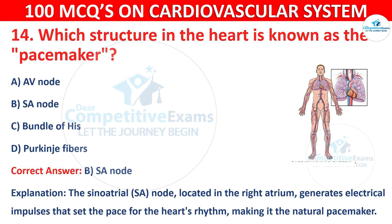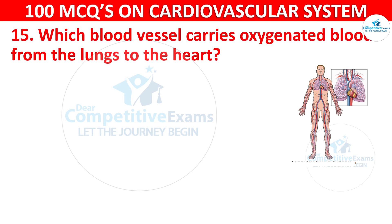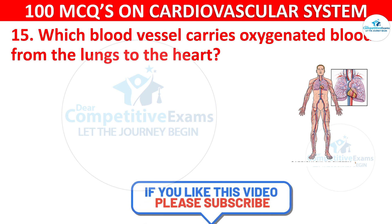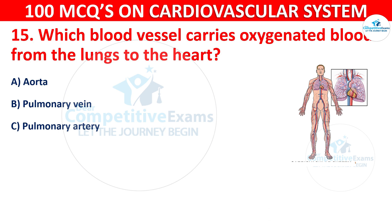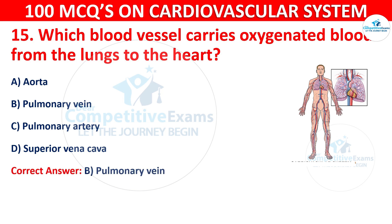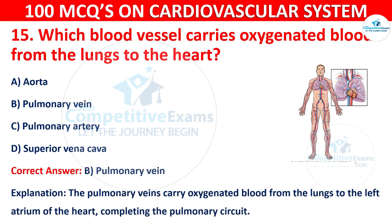Q15. Which blood vessels carry oxygenated blood from the lungs to the heart? Options are: aorta, pulmonary veins, pulmonary artery, or superior vena cava. The correct answer is B — pulmonary veins. The pulmonary veins carry oxygenated blood from the lungs to the left atrium of the heart, completing the pulmonary circuit.